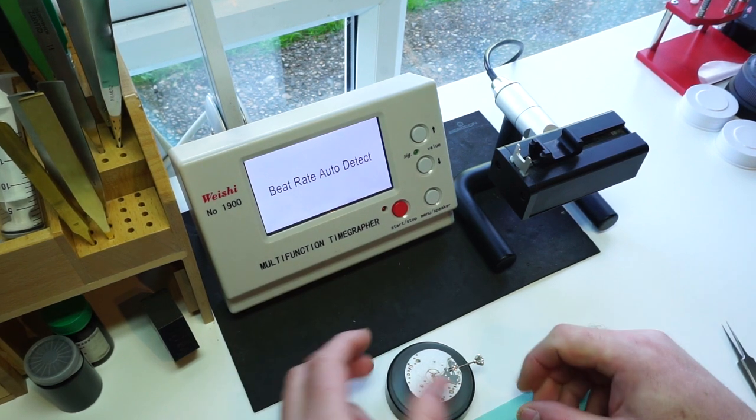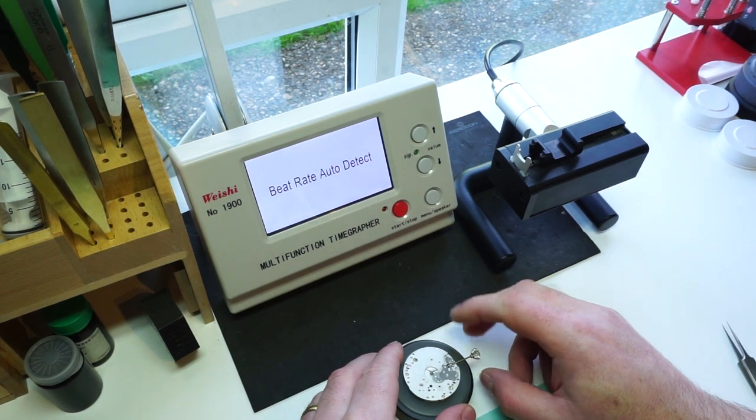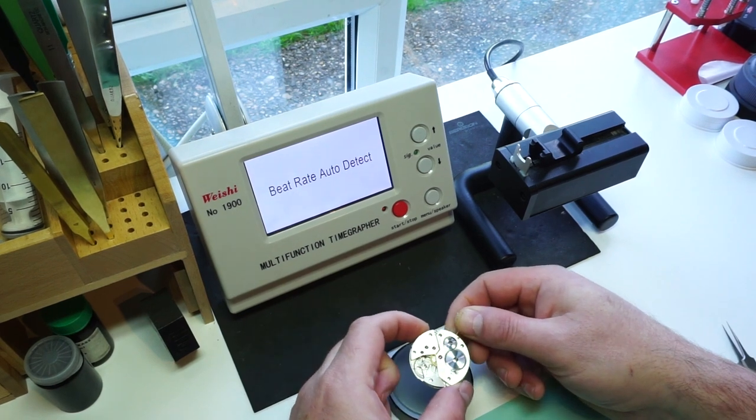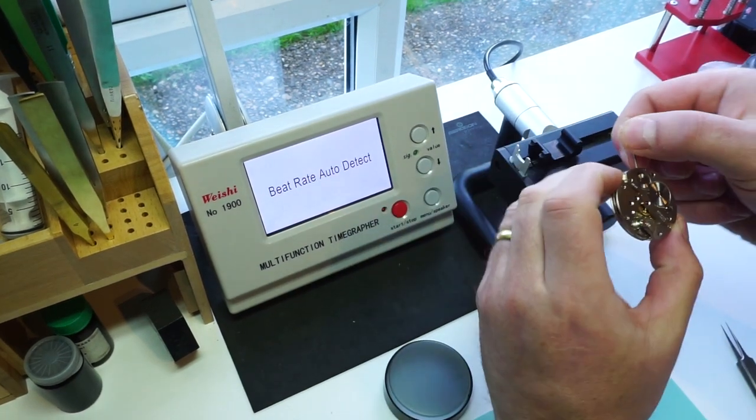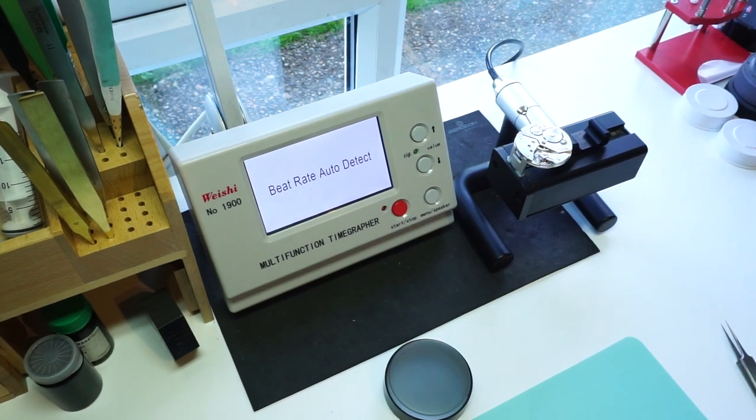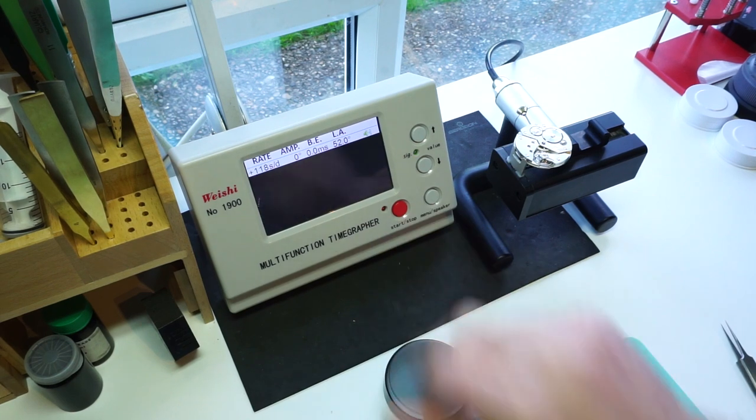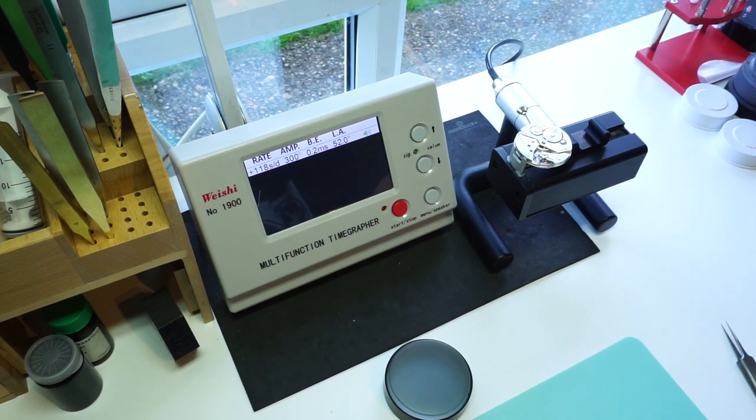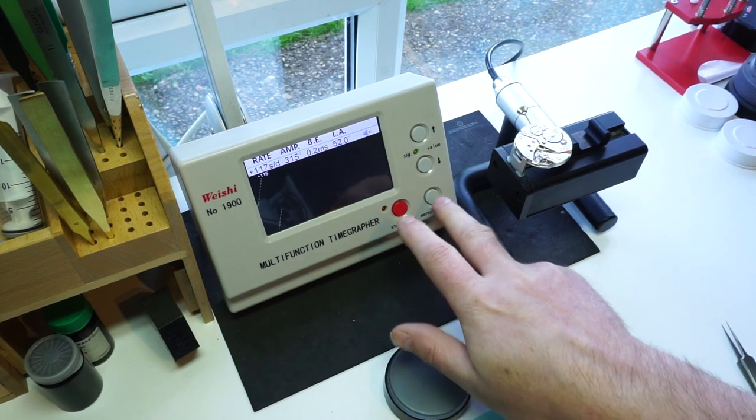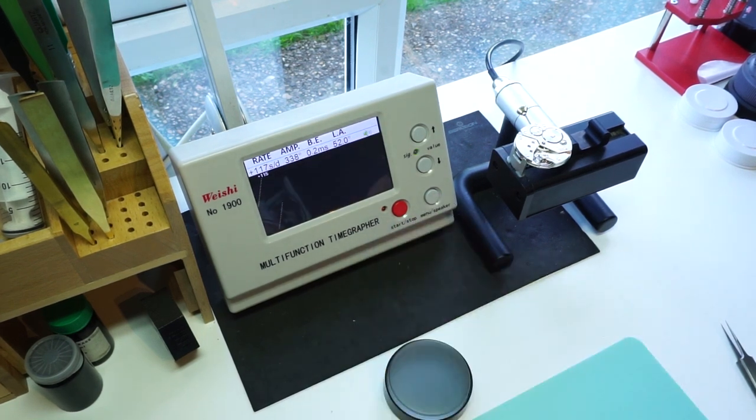We have the timegrapher on and set, and I've set it to a low period which will become more apparent when the timegrapher video has been done. So we can set the movement in the microphone. The timegrapher makes an audio noise for the noise that's created in the escapement. You can also turn it to sound as well.